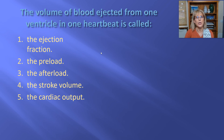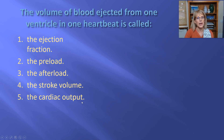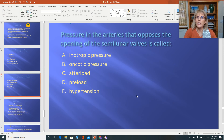Review: The volume of blood ejected from one ventricle in one heartbeat is called stroke volume — not ejection fraction (which is a percentage), not preload (which equals end diastolic volume), not afterload (which is arterial pressure opposing the semilunar valves), and not cardiac output (which is the amount ejected in one minute). The pressure in the arteries that opposes the opening of the semilunar valves is called afterload. We will start there in the next video.